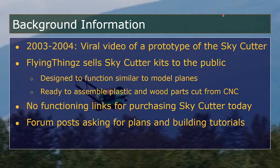In the early 2000s, there was a viral video of a prototype of the skycutter. This skycutter was sold by a company named Flying Things. They sold these flying lawnmower kits to the public, and they were designed to function very similar to how a model plane works. The parts were made of plastic and wood, and they were ready to assemble. These parts were cut from a CNC.